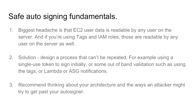When the server comes online it sends the 'I'm a web server' password to the auto-signer, which then trusts it. The problem is almost all the sources you have for giving the server that information are readable by any user on the server — such as user data, available via a curl request, or EC2 tags, which if you're using IAM roles are readable by all users on the box. So you have to design an auto-signing process that can't be replayed, such as single-use tokens or out-of-band validation at the cloud provider's API level.